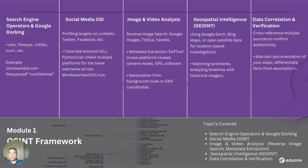The fourth area is geospatial intelligence — GEOINT. Using Google Earth, Bing Maps, or other open satellite data, you can pinpoint locations and do location-based investigations. Matching landmarks is one approach — for example, if there is a picture containing Big Ben or the Houses of Parliament, it's easy to understand the picture is from London. Similarly, you can use landmark mapping and landmark checking to gather location-based information.